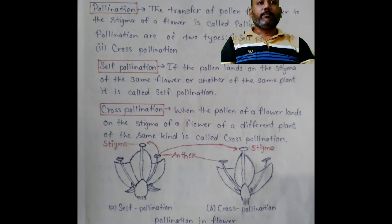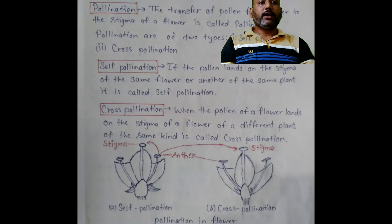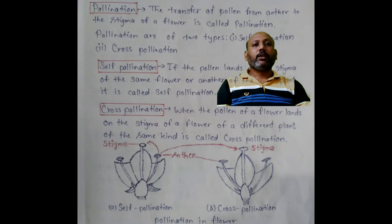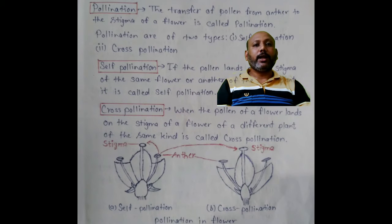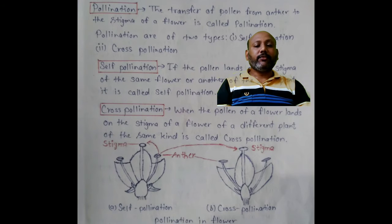Self pollination occurs when the pollen lands on the stigma of the same flower or another flower of the same plant. Cross pollination occurs when the pollen of a flower lands on the stigma of a flower of a different plant of the same kind. As you may see in the figures, self pollination and cross pollination are different.